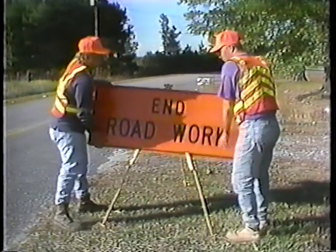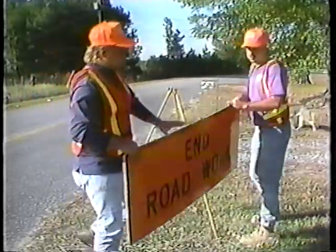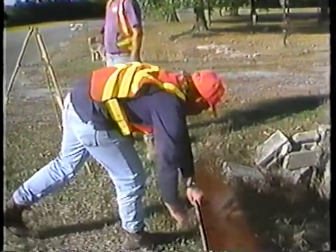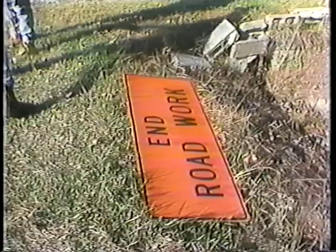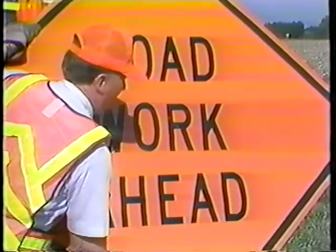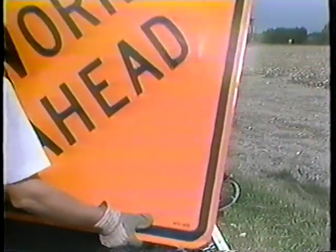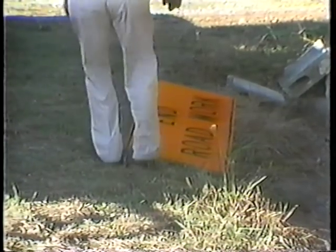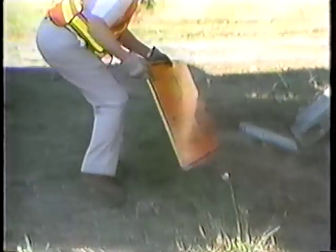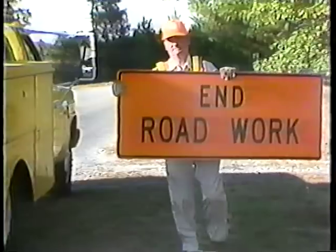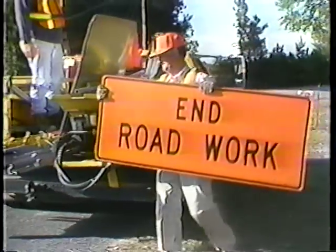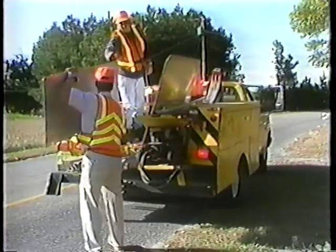As soon as the work is completed, remove the traffic control devices in the reverse order of installation, starting with the termination area and proceeding back to the first device installed. A good technique for removing the control devices is to first place them on the shoulder of the roadway and then pick them up in the direction of traffic flow. The best way to illustrate these principles is to show the installation of the control scheme for some common types of operations.